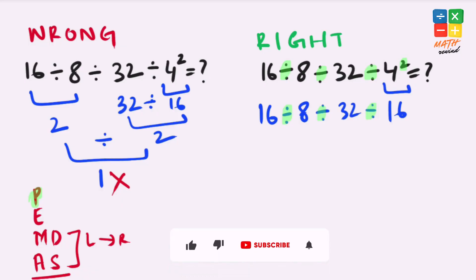So let's solve this left side first: 16 divided by 8 gives us 2. Our equation simplifies to 2 divided by 32 divided by 16.